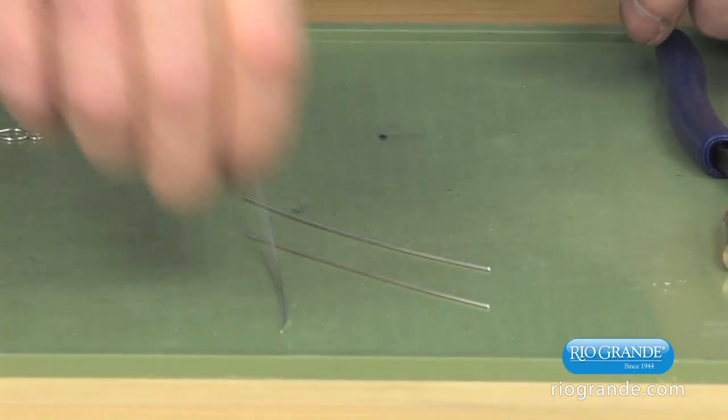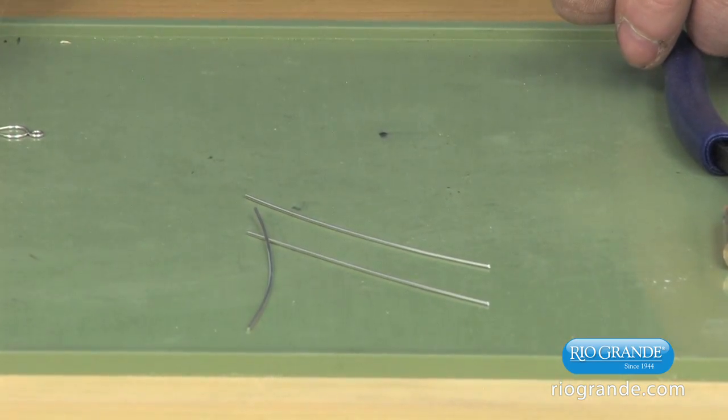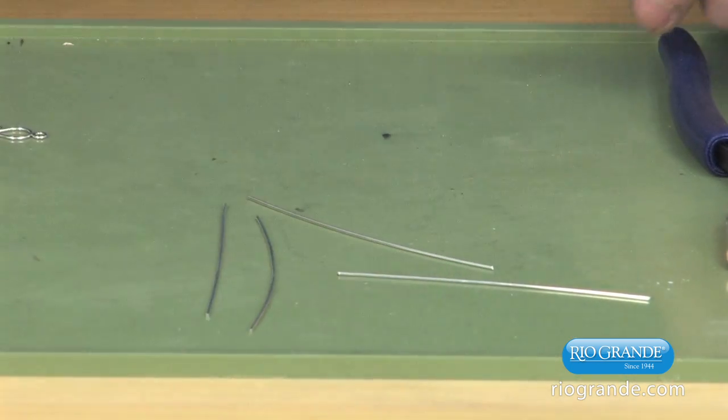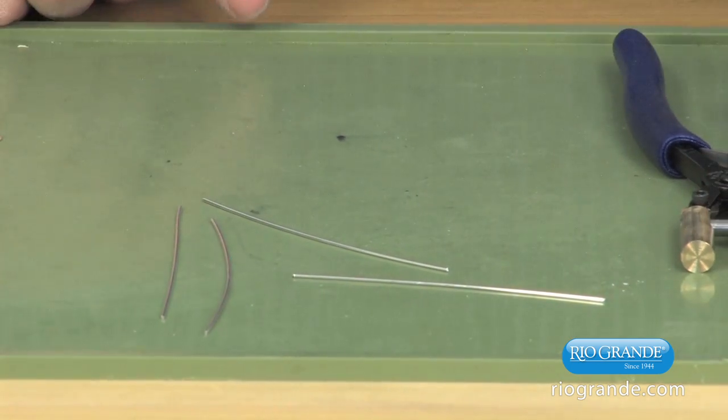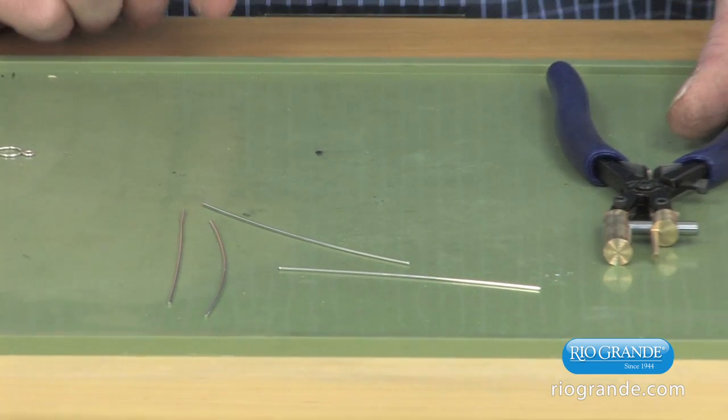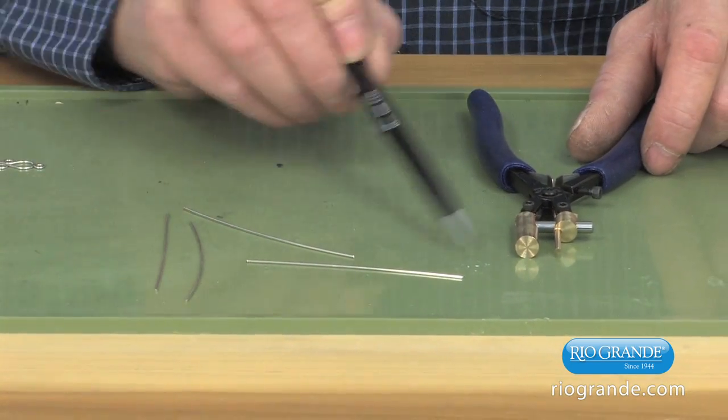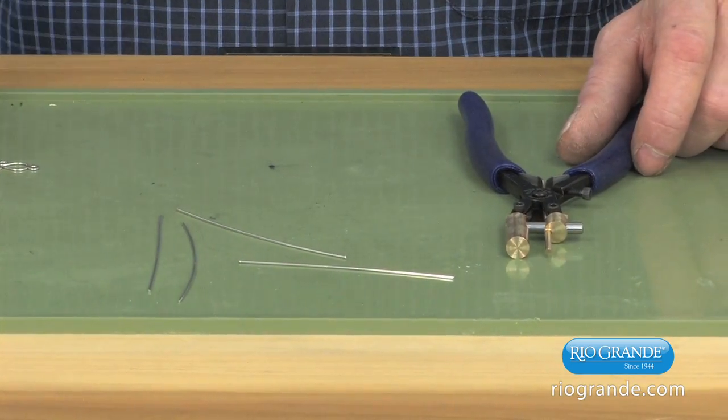I'm using 18 gauge wire and I'm cutting them to three and a half inches in length to make the S-hooks.